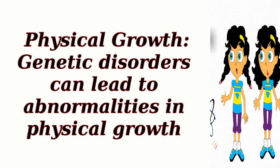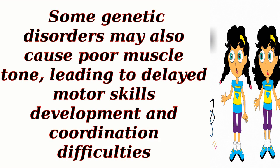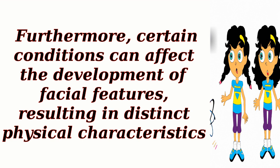Physical growth: Genetic disorders can lead to abnormalities in physical growth. For example, conditions like achondroplasia, a form of dwarfism, can result in short stature due to impaired bone growth. Some genetic disorders may also cause poor muscle tone, leading to delayed motor skills development and coordination difficulties. Furthermore, certain conditions can affect the development of facial features, resulting in distinct physical characteristics.